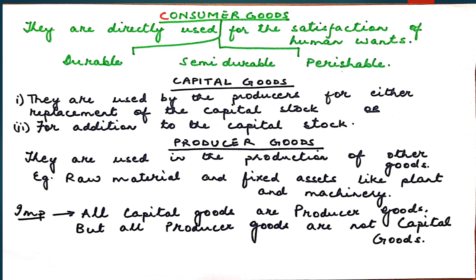Durable goods are those which can be used in consumption for a long period of time, for example refrigerators and television sets. Semi-durable goods are those which can be used only for a limited period of time, for example furniture and crockery. Perishable goods are those which get destroyed very quickly and can be used up only for a single act of consumption.